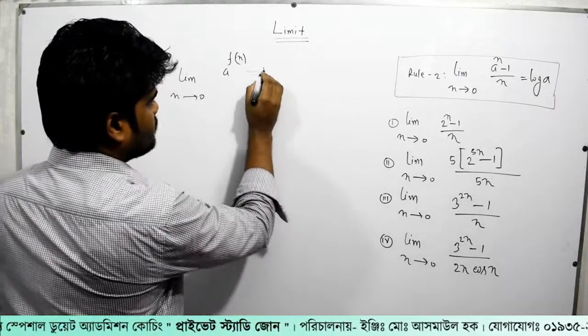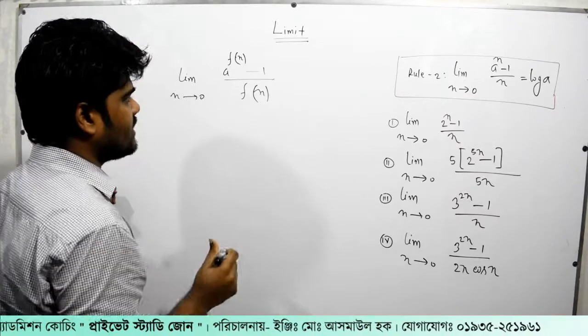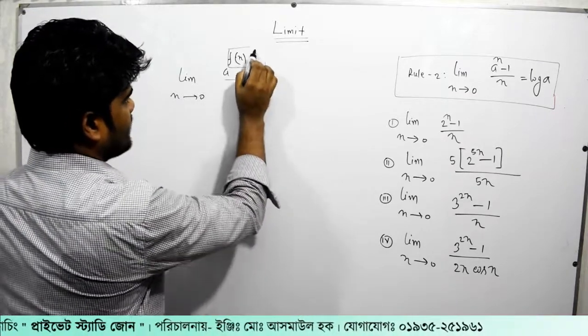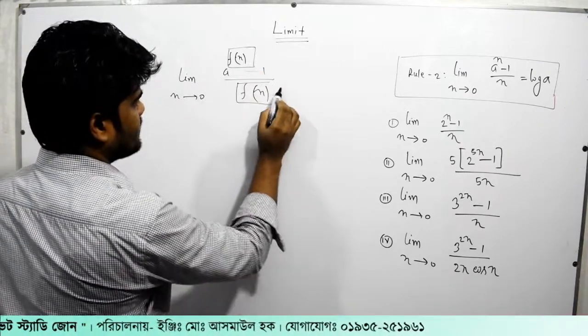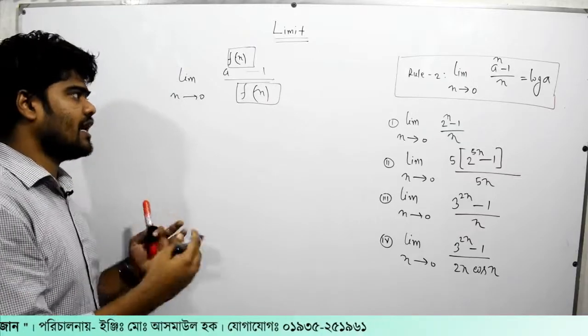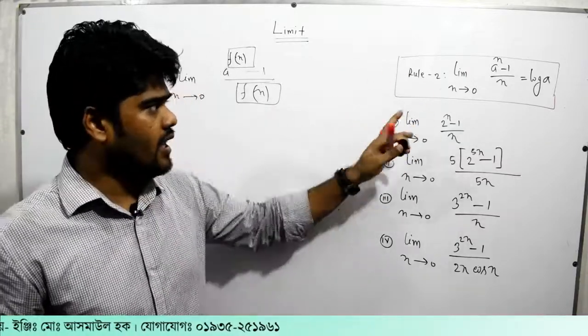So minus 1 divided by f of x. But a to the power x, a to the power x is equal to 0. That is equal to 0. So we apply this rule, this rule, and rule zero.